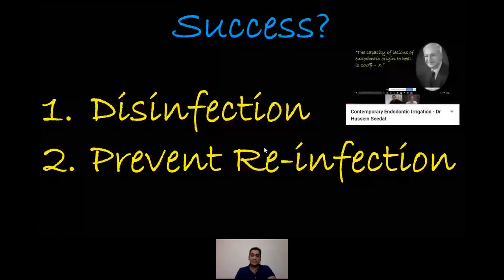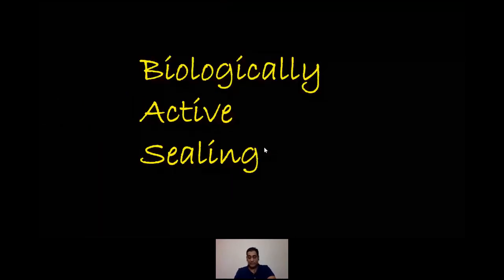Success depends on two major factors. The first is disinfection of the root canal space — we covered that in a webinar on endodontic irrigation last year, available on YouTube by searching 'contemporary endodontic irrigation.' Today we're going to speak about the second part: the prevention of reinfection of the root canal space. How we do this is by sealing it — but the topic for this evening is on biologically actively sealing the space.